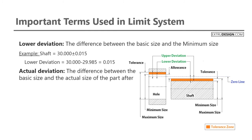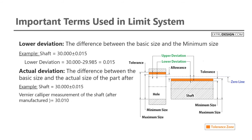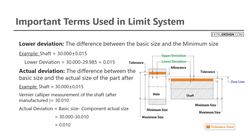Actual deviation: the difference between the basic size and the actual size of the part after it is manufactured is known as actual deviation. For example, a shaft notated as 30.000 ± 0.015 where the vernier caliper measurement after manufacturing is 30.010 — the actual deviation will be 30.000 minus 30.010, which gives an actual deviation of 0.010.